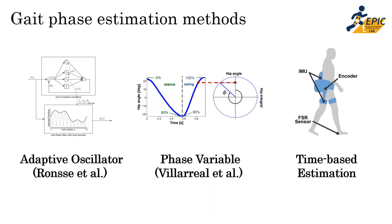What are the commonly used gait phase estimation methods currently available in the literature? Some of them are adaptive oscillators and phase variables, which both leverage the sinusoidal nature of hip movement — the oscillator uses frequency domain extraction whereas the phase variable maps direct kinematic information to a phase portrait. The most commonly used method is time-based estimation, which uses mechanical sensor information such as an FSR foot switch to identify gait events and linearly interpolates the gait phase using an average stride duration computed from these sensors.